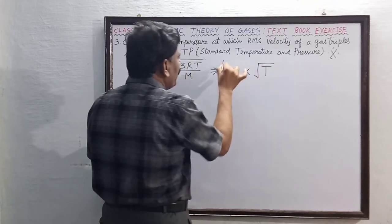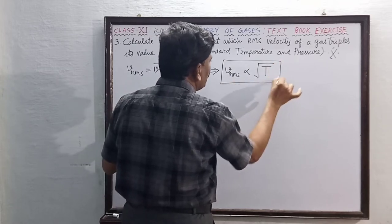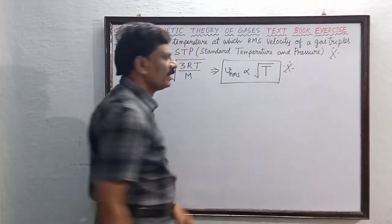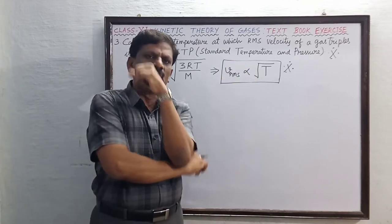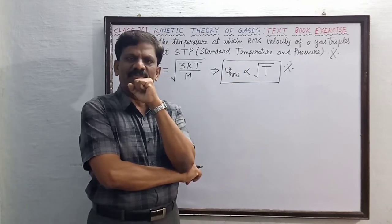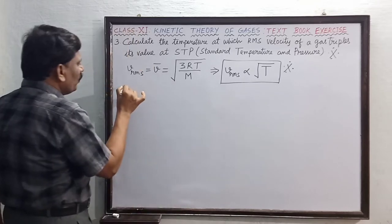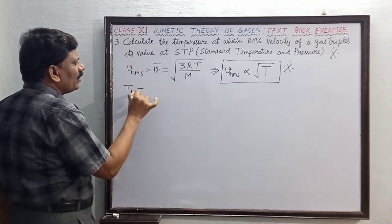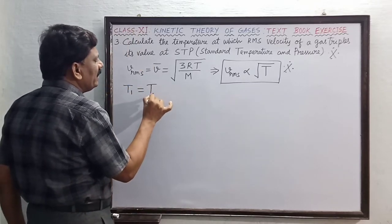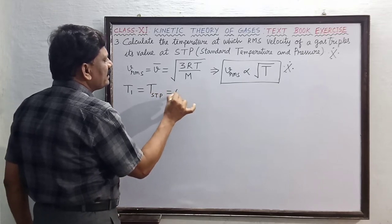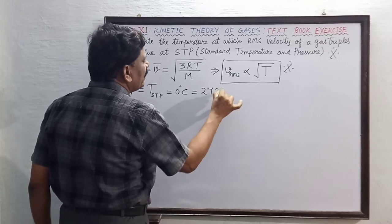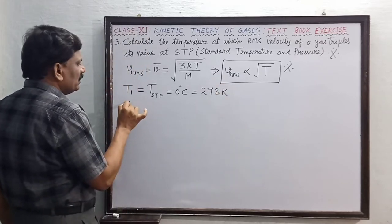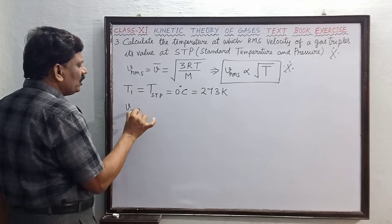The rms velocity at STP, where temperature T_STP is zero degrees Celsius, equals 273 Kelvin.